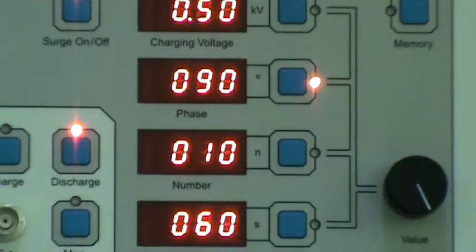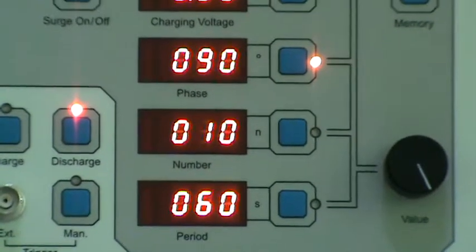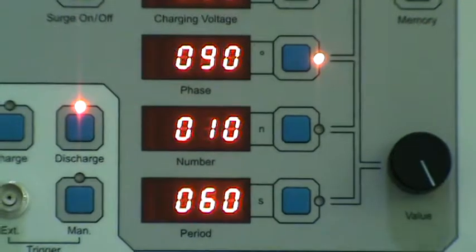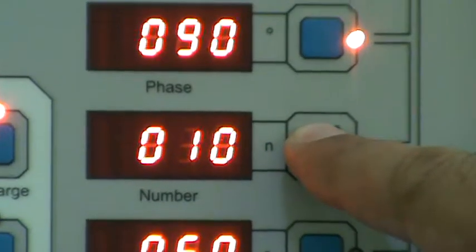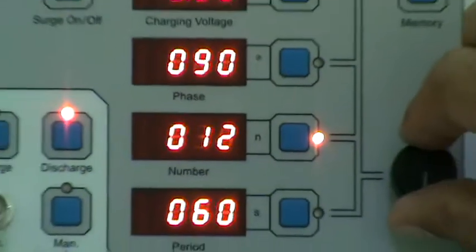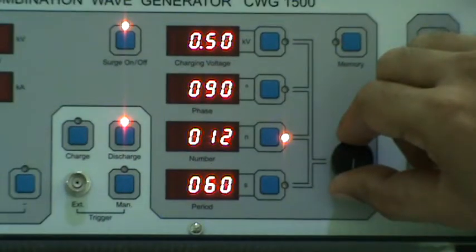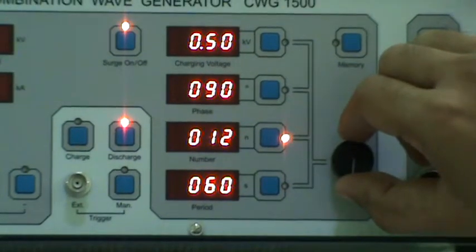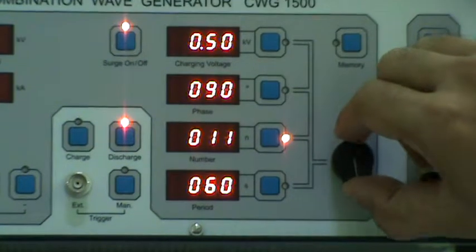Now select the number of pulse per test cycle by pressing this button. We will press this button and rotate this encoder. The number of pulses will be selected per cycle. Let it be at 10.